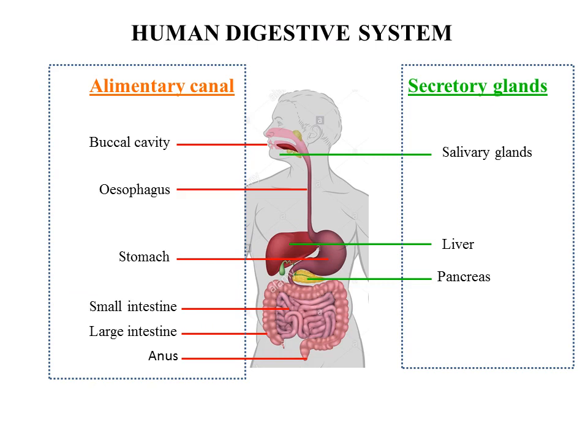The food passes through a continuous canal known as the alimentary canal or digestive tract, which begins at the buccal cavity and ends at the anus. The canal can be divided into various compartments: first is the buccal cavity or mouth, next is the food pipe or esophagus, third is the stomach, fourth is the small intestine, next is the large intestine ending in the rectum, and then the anus.